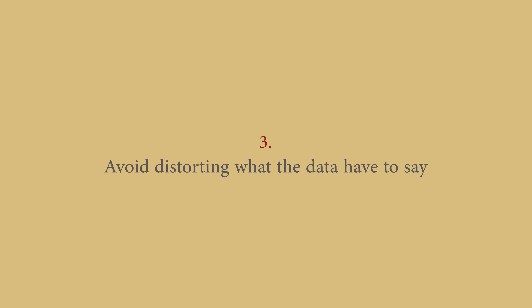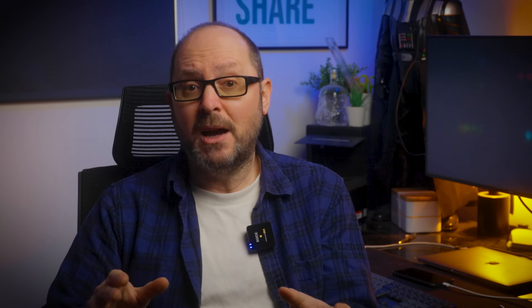Number three: avoid distorting what the data have to say. Data visualized with the intention of trying to tell a different story or mislead the viewer is essentially lying about the data. A common way this is done is by setting the y-axis value of a graph at a point greater than zero to exaggerate the significance of certain data.